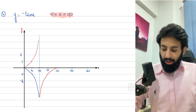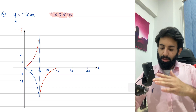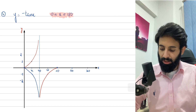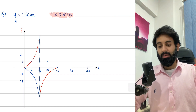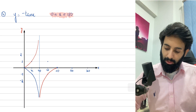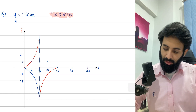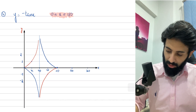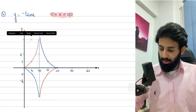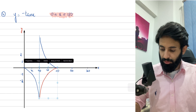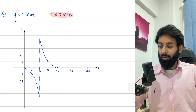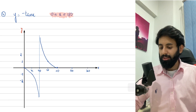Now let's talk about the part after 90. At 180 it's zero, so nothing happens there. At 135 it was minus one, but now it's going to be plus one. And it's not going to go to negative infinity anymore — instead it goes to positive infinity approaching 90 from the right. This is what the graph of y equals minus tan x looks like.